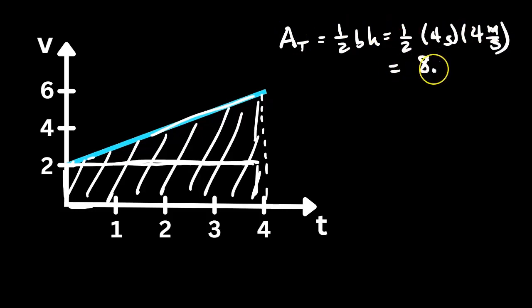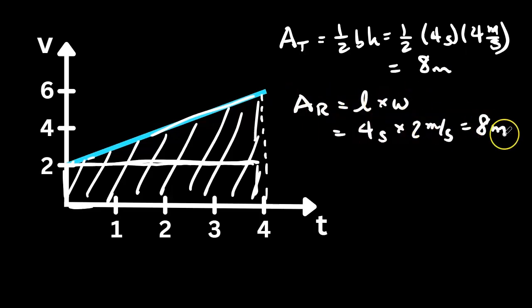And we get 8 meters. And for the rectangle, we're going to use length times width. Now we're going to add these two numbers to get the total area.